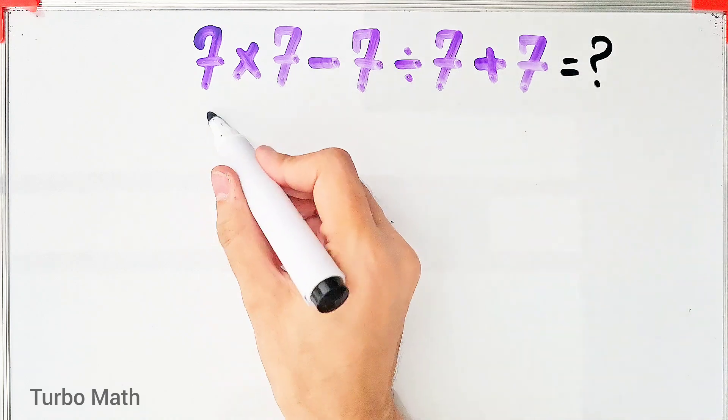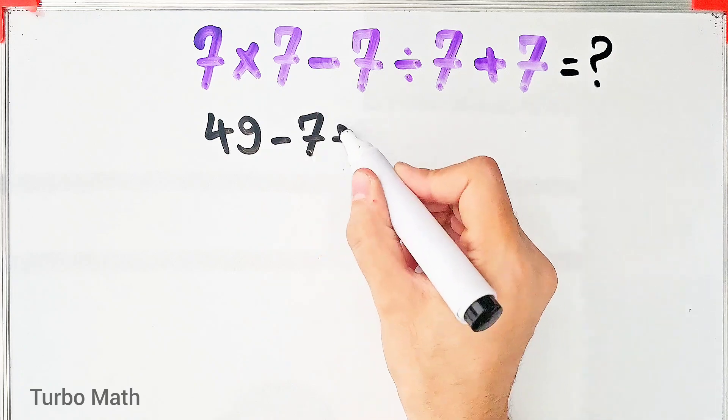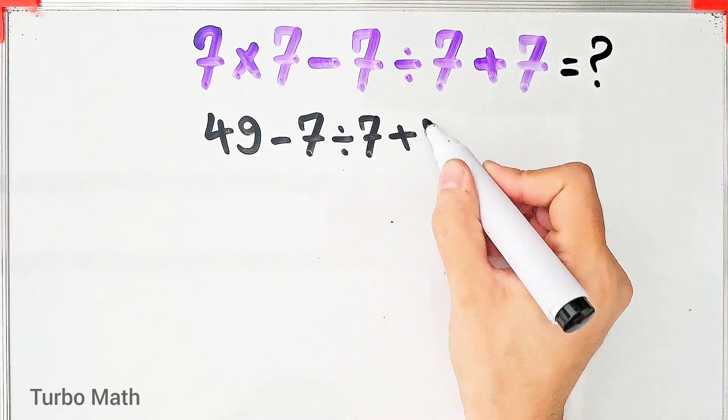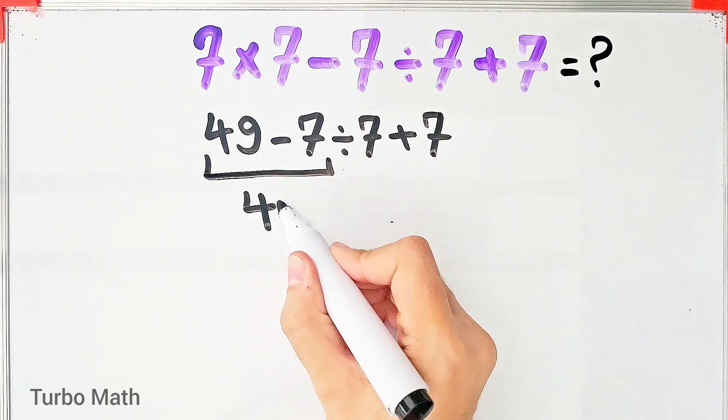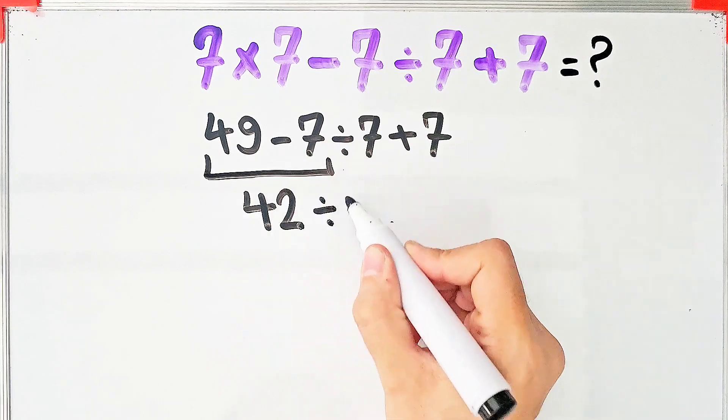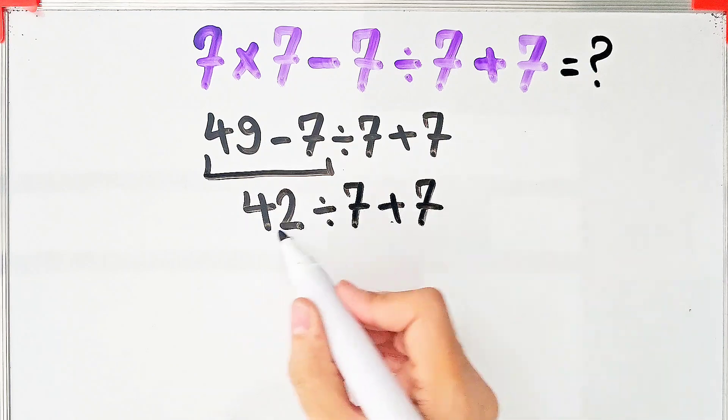In the wrong way of solving this question, some people solve it like this: 49 minus 7 divided by 7 plus 7. 49 minus 7 equals 42. 42 divided by 7 plus 7. 42 divided by 7 equals 6.